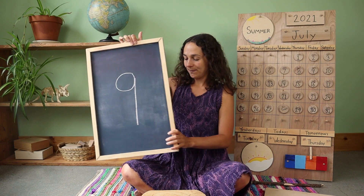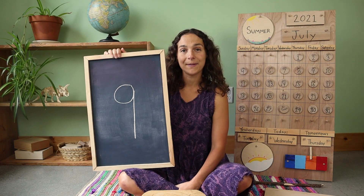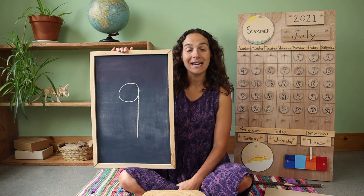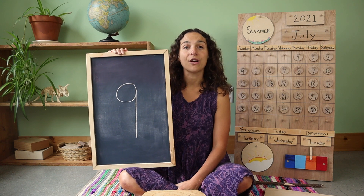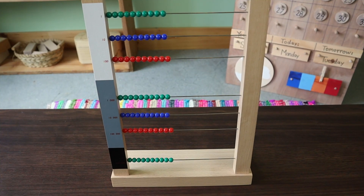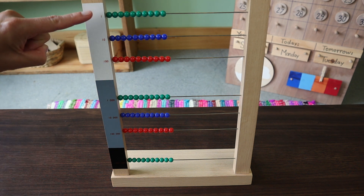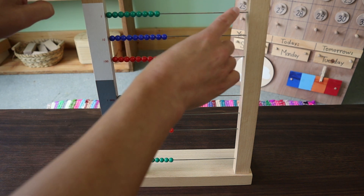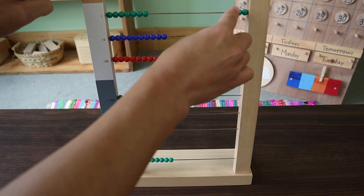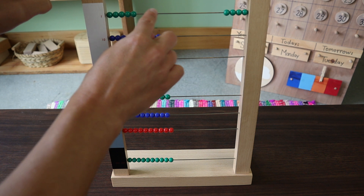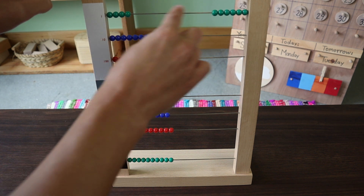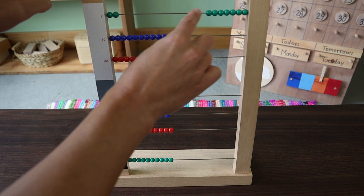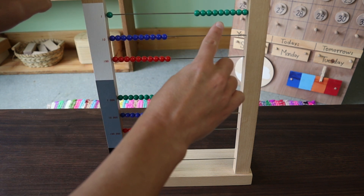Here's the number of the week. What number is this? Nine. That's right. Now let's count to the number nine together using the large bead frame. We are going to be counting the green beads, which are the units at the top. Let's count nine units together: one, two, three, four, five, six, seven, eight, nine. Nine units.